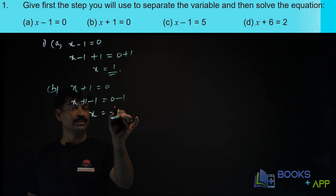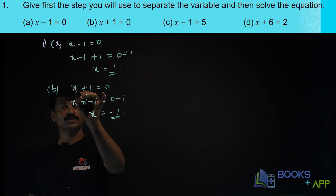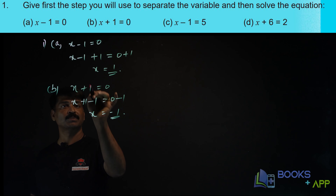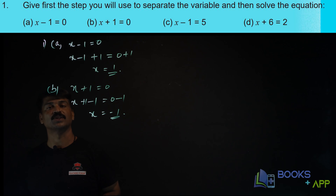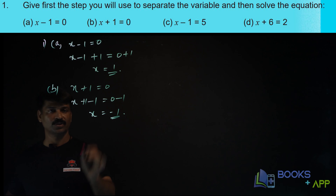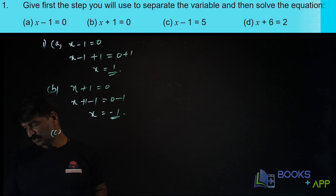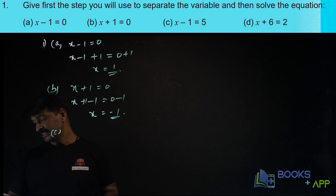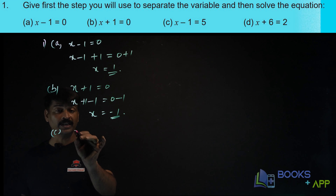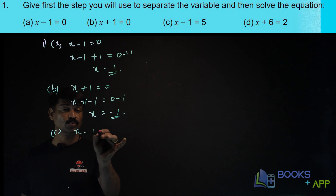You put x is equal to minus 1 here — minus 1 plus 1 is 0, so you are right. Now question number 3: x minus 1 is equal to 5.